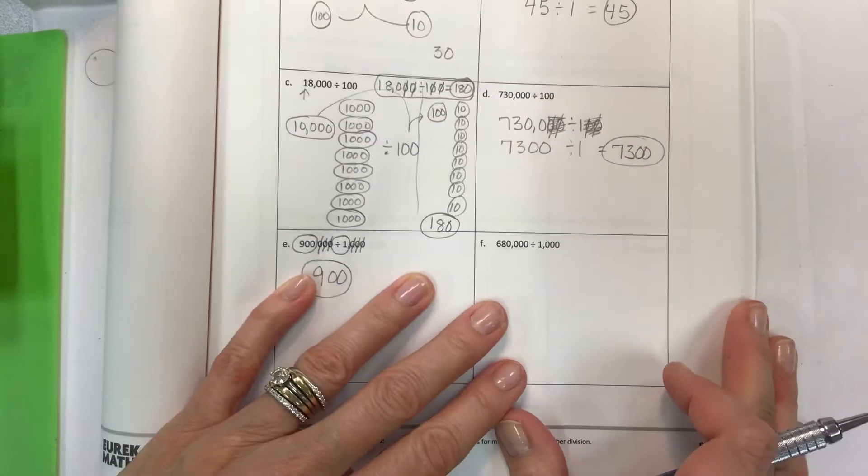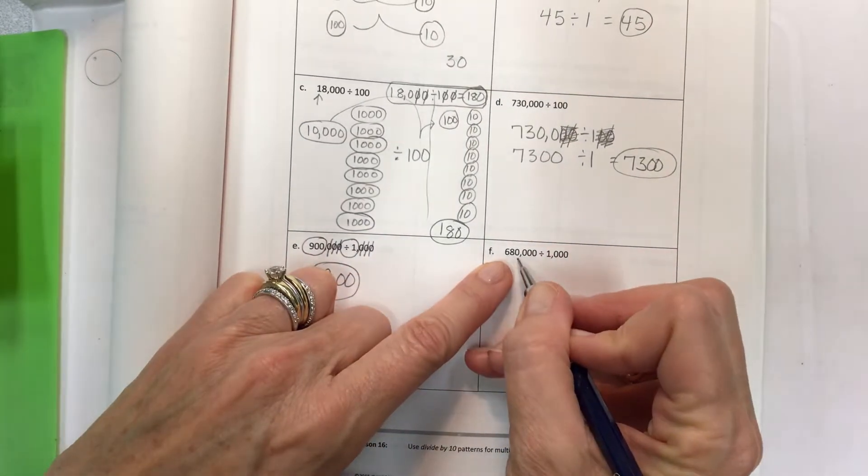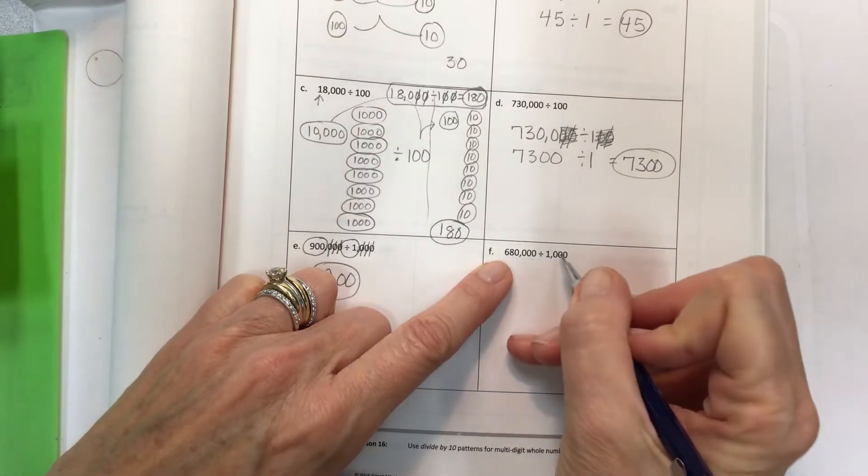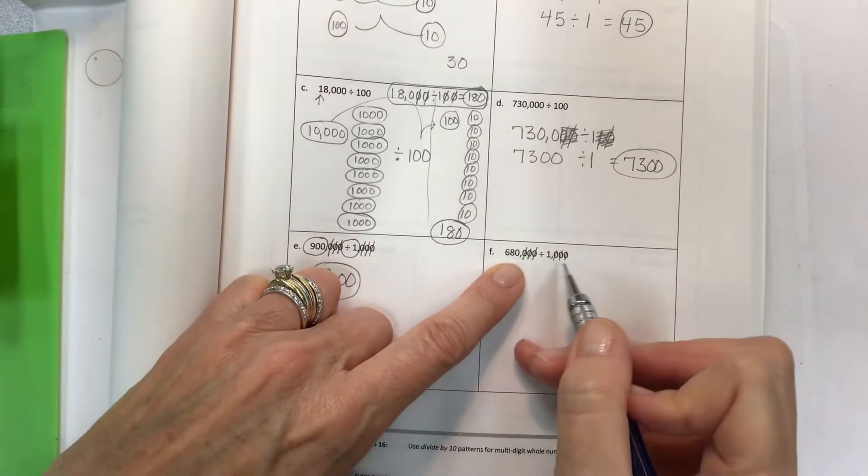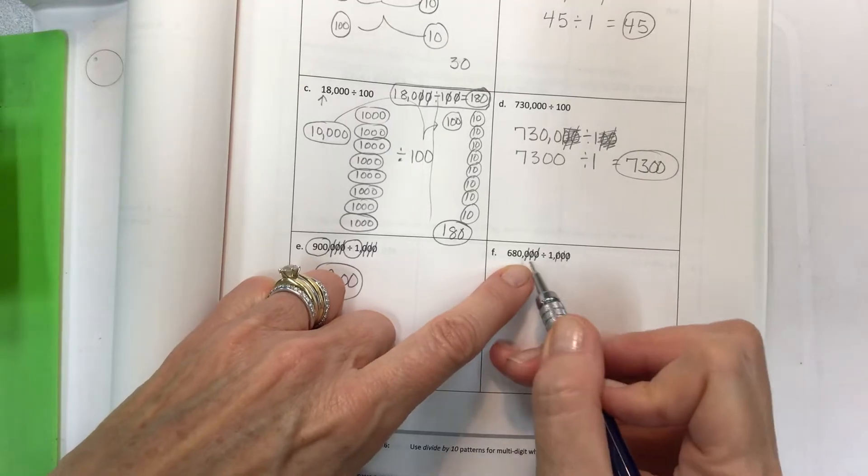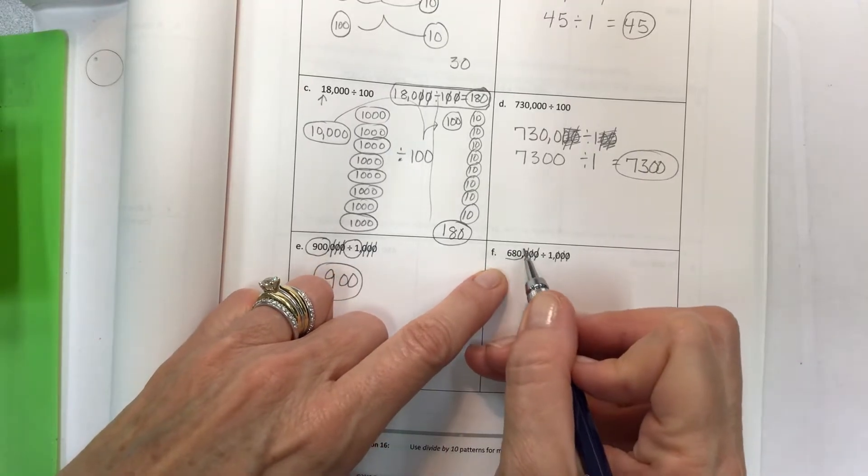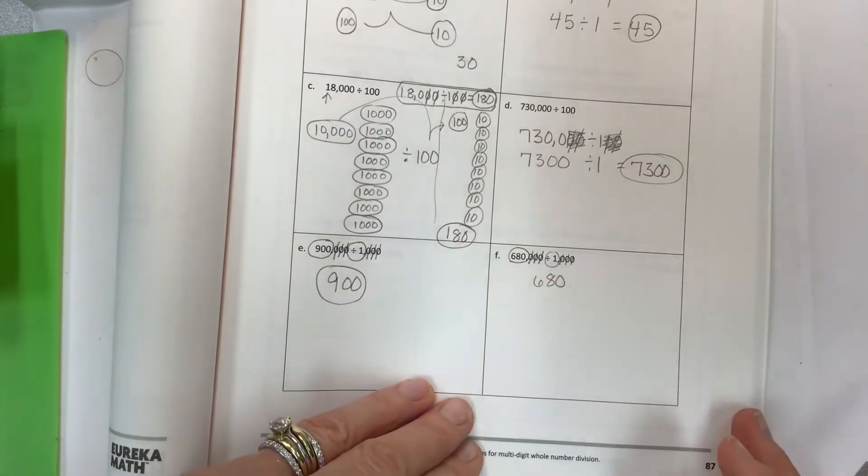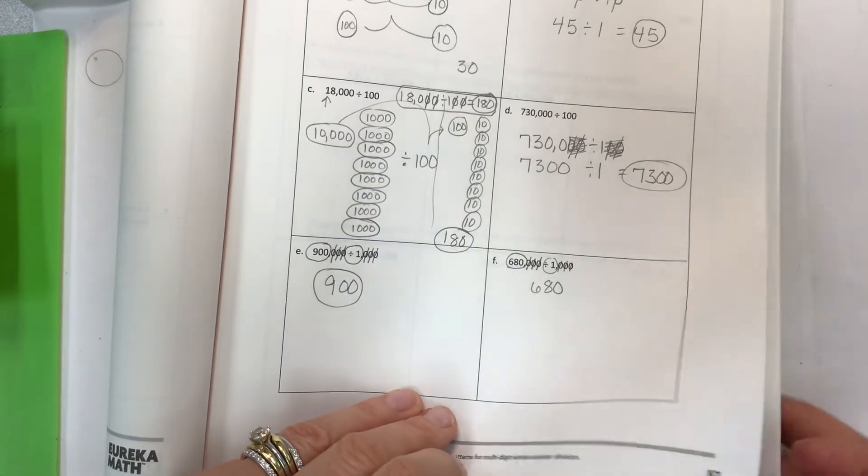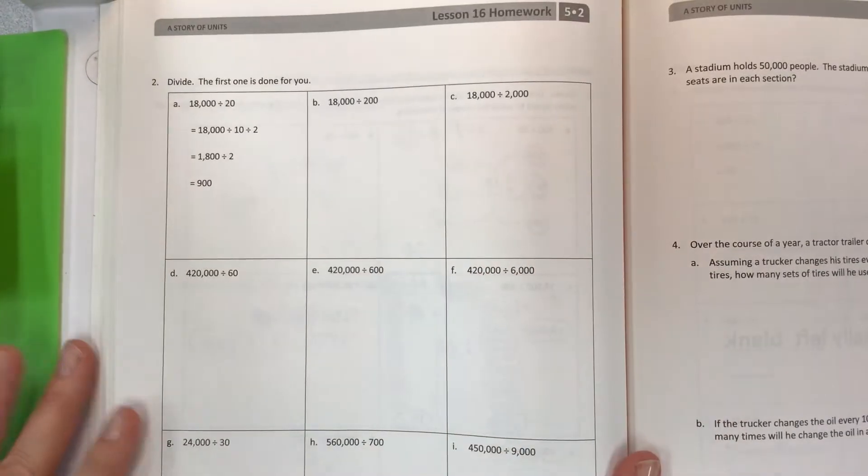Taking 900,000 divided by 1,000. Three zeros here, three zeros here. That leaves you with 900 divided by 1 for 900. 680,000 divided by 1,000. Three here, three here. That leaves us with 680 divided by 1 for 680.